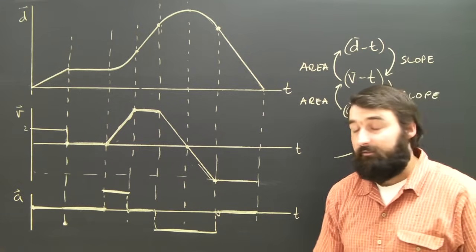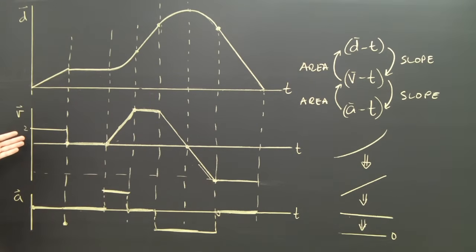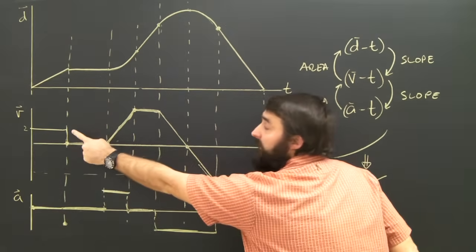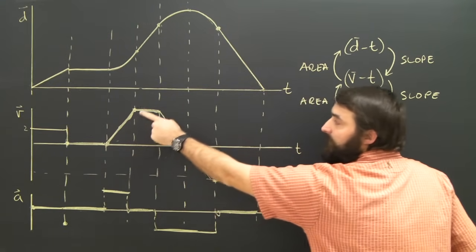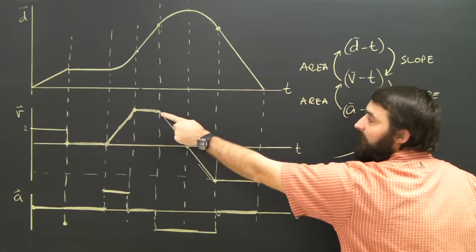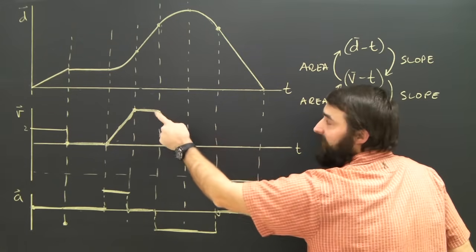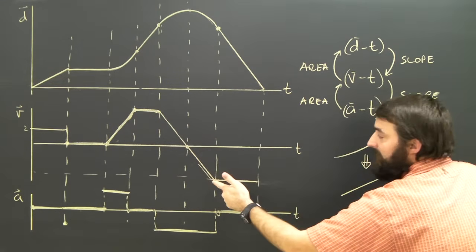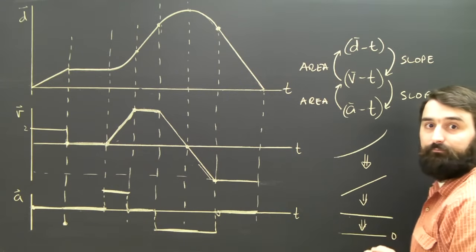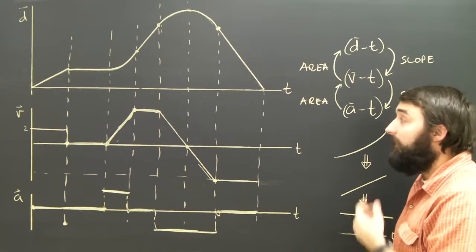What does the velocity time graph say? The velocity time graph says the object was going at a constant velocity in the positive direction, all of a sudden stopped, accelerated in the positive direction, and then stopped. Slowed, sorry, then it maintained that speed for a while. Then it slowed down, turned around, and then maintained a velocity in the negative direction. Well, which is hopefully exactly what I just said for the DT graph. So that's really good. The two are lining up.